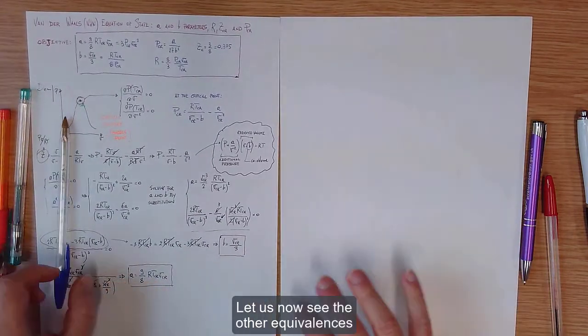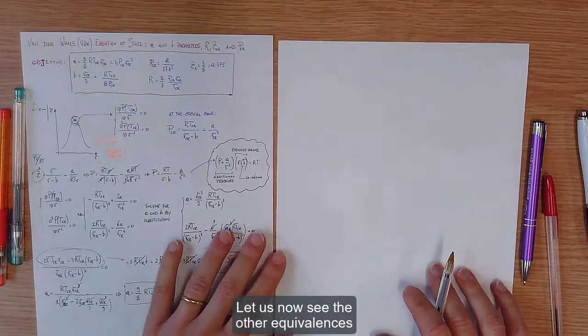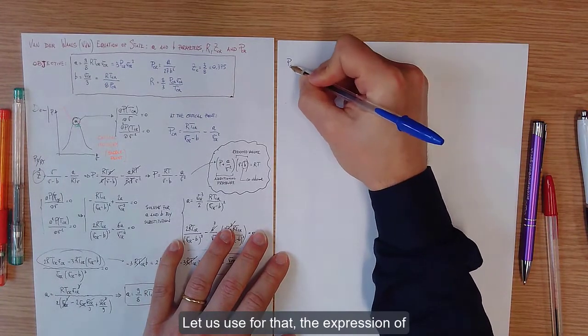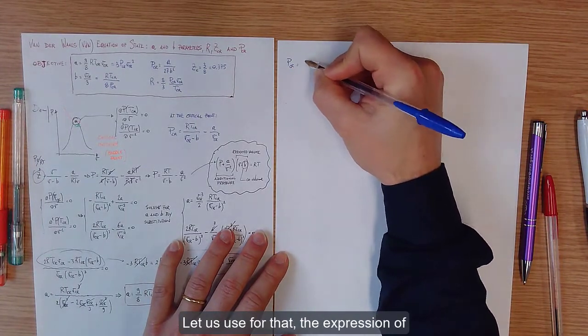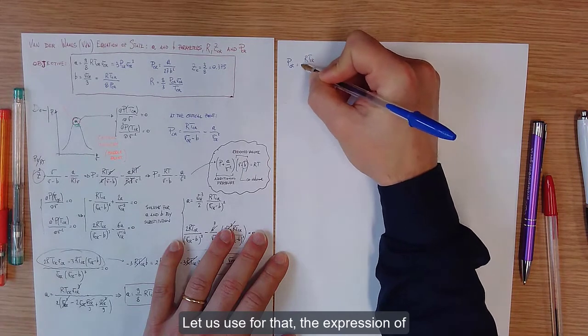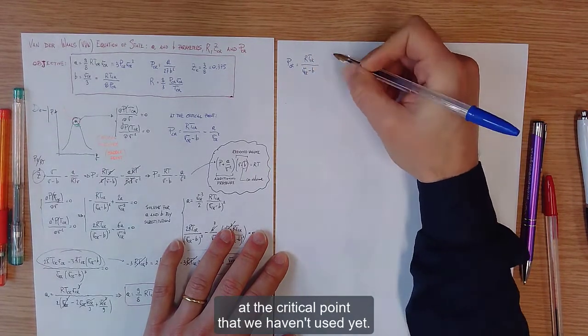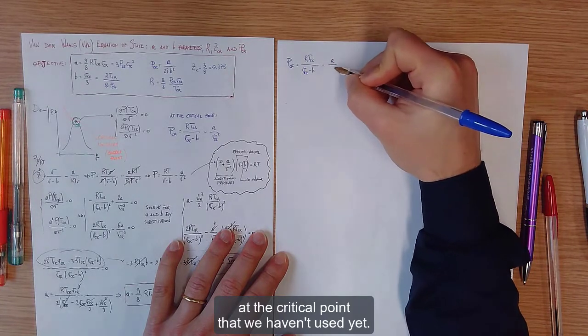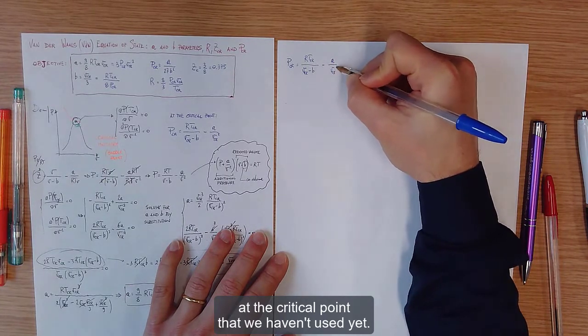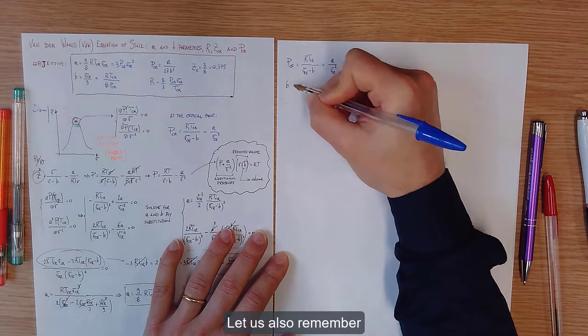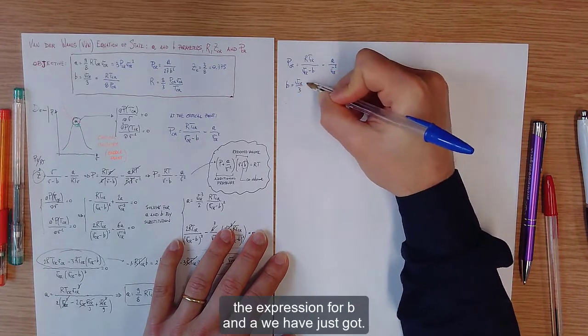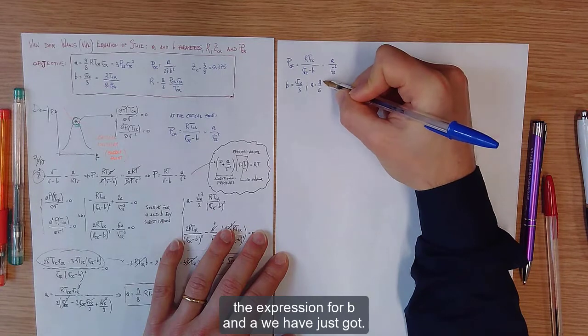Let us now see the other equivalences we have written in blue. Let us use for that the expression of the Van der Waals equation of state at the critical point that we haven't used yet. Let us also remember the expression for b and a we have just got.